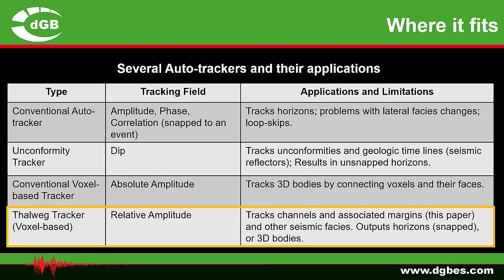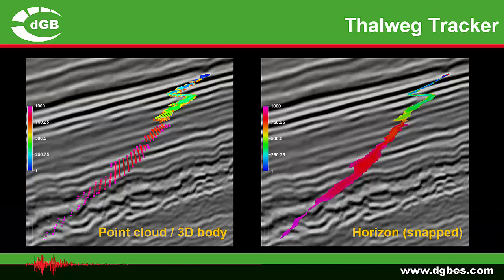Then we come to the thalweg tracker. Also a voxel-based tracker, but the main difference is that it tracks relative amplitude. It can be used for tracking channels and associated margins, which are the main examples in this paper, but we believe it also has more general applicability for other seismic facies. The output is either a 3D body, a point cloud, or you can snap it to a horizon. On the left, an example shows a channel as a point cloud or 3D body; on the right, the point cloud has been snapped to a horizon.